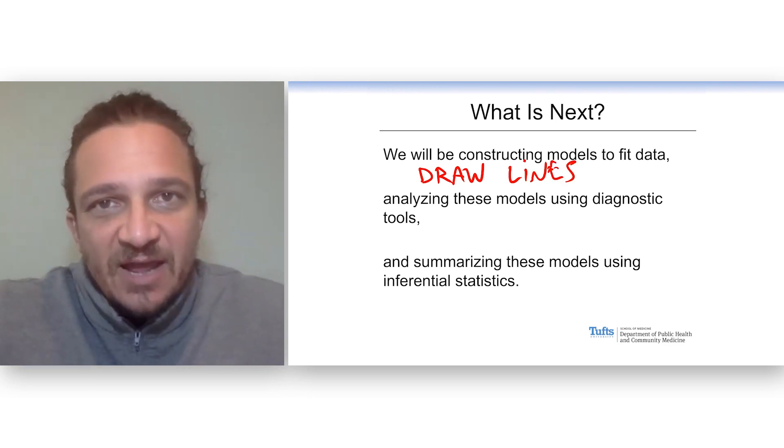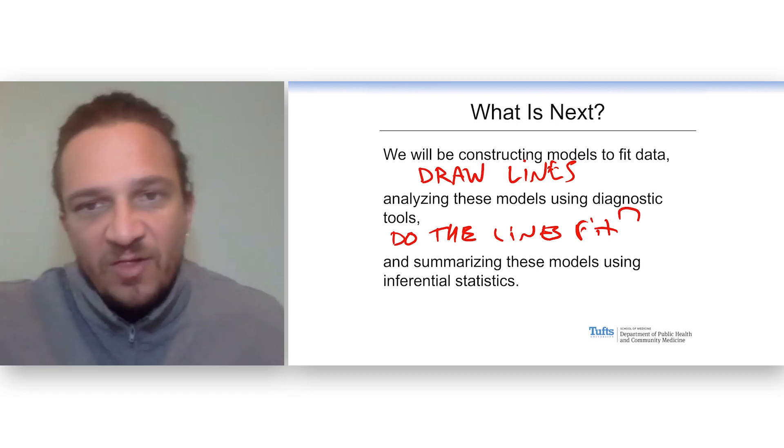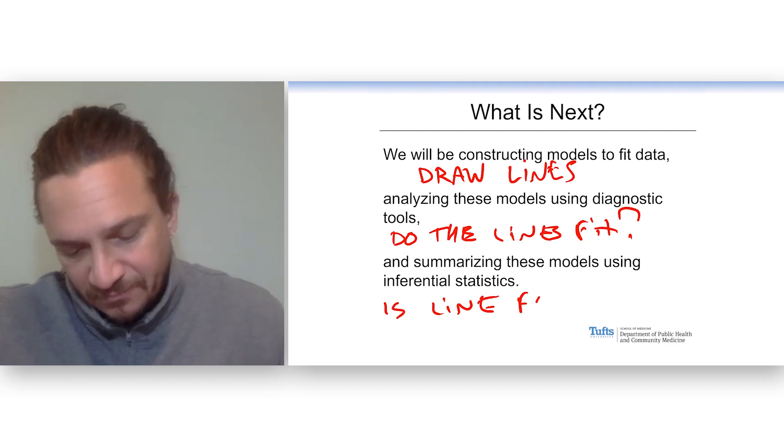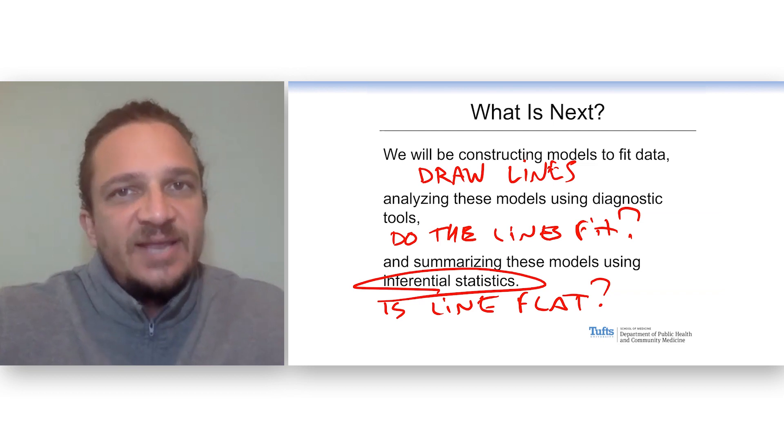And then we're going to say, do the lines fit? Is it appropriate to draw a line? And then we're going to say, is the line flat? Inferential statistics. What does this line tell us about the true population line?